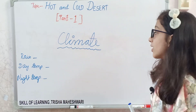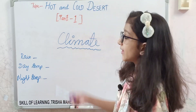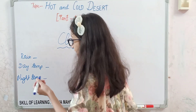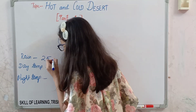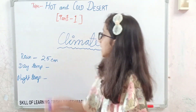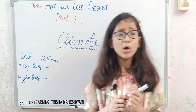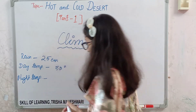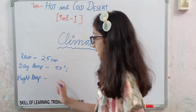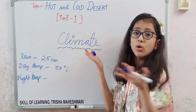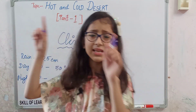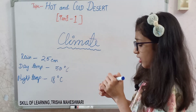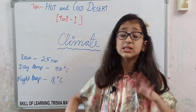The climate of hot deserts has a maximum rainfall of about 25 cm annually. The day temperature can reach a maximum of about 50 degrees Celsius — sometimes it does reach 50 degrees. The night temperature is also quite warm and can be around 0 degrees Celsius.